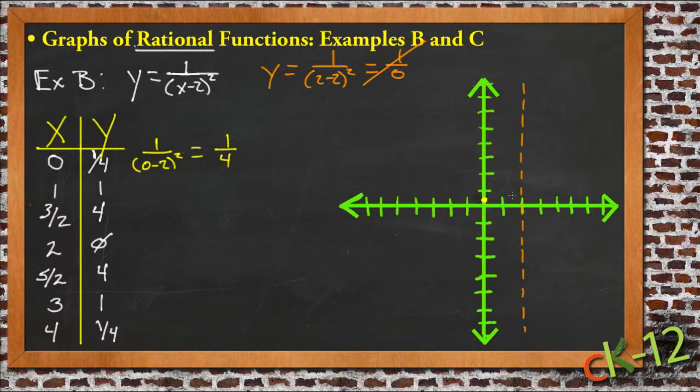Our next point is x is 1, y is 1, so that's right about here. And if x is 1 and a half, then y is 4, so you can see suddenly we're climbing really fast here. If x is 2, we get illegal operations, so that doesn't work.